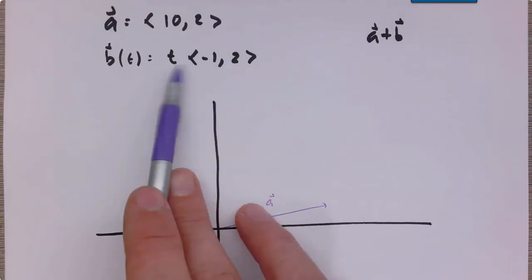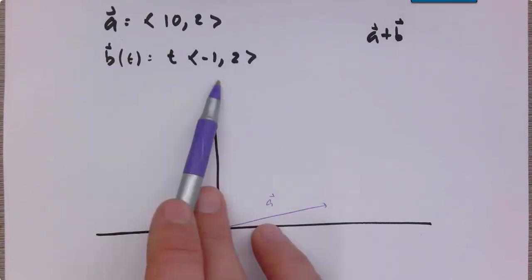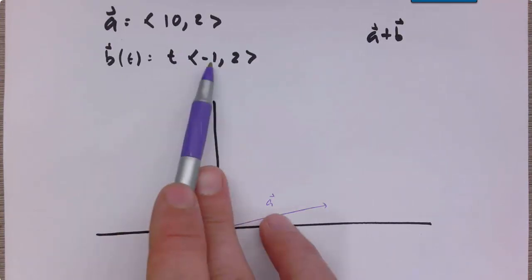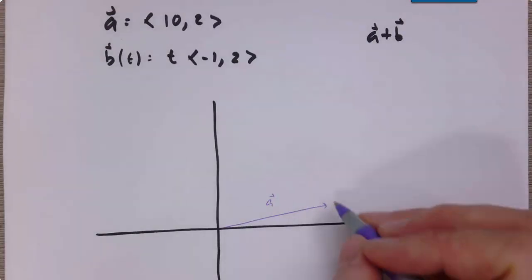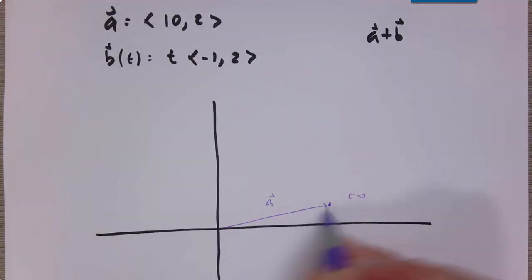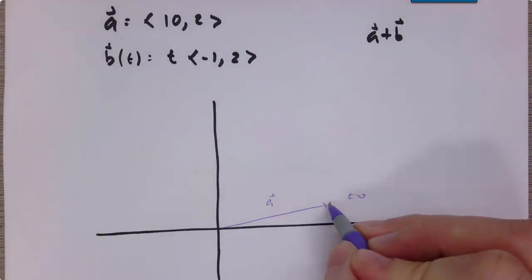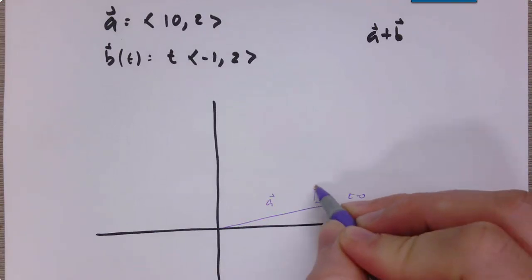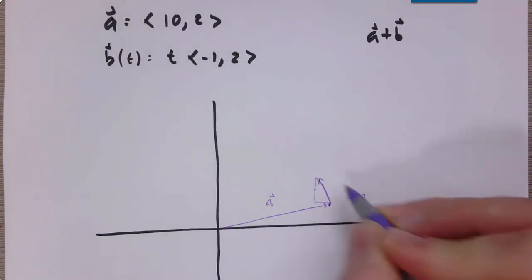So when time is 0, this is the 0 vector. When time is 1, it means we're going left 1, up 2. So at time equals 0, a plus b takes us here. At time 1, I've gone left 1, up 2, so like this.